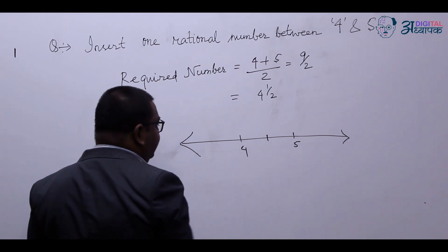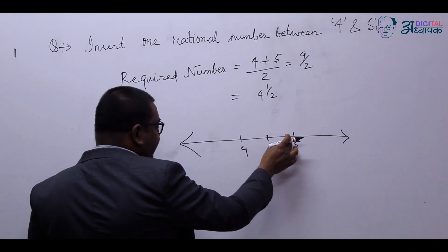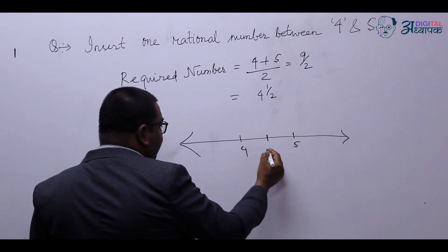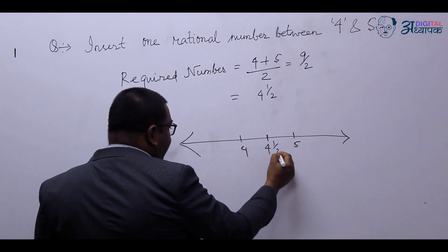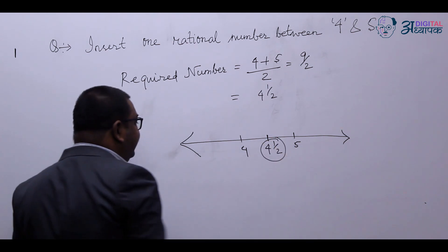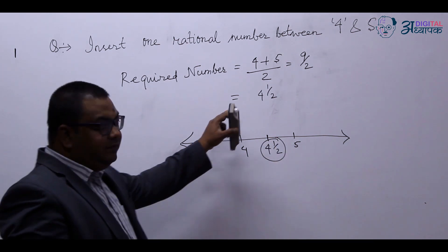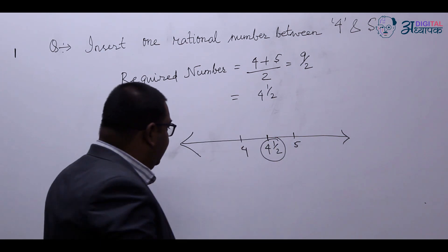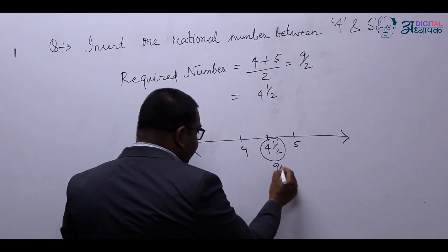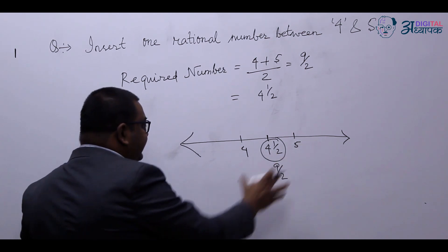So here you can say this is first part and this is second part. And this place will be called 4 whole number 1 upon 2. So you can clearly see the number 4 whole number 1 by 2, or you can say 9 upon 2, lies between 4 and 5.